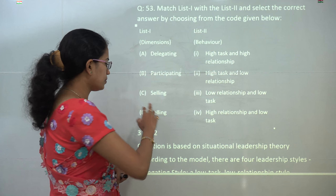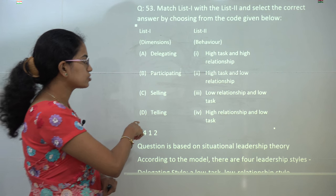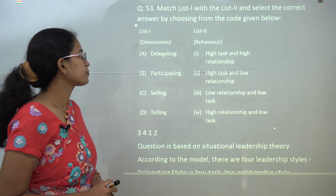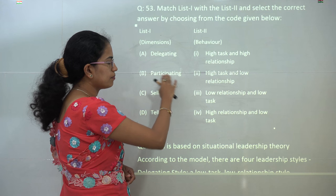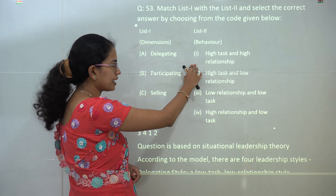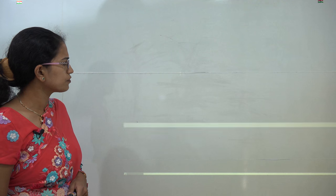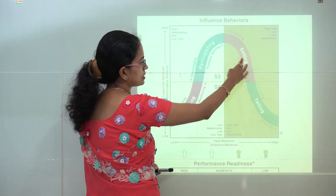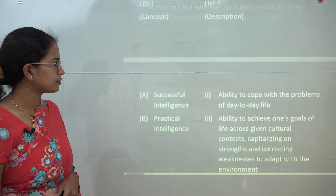Now next, you have to understand the situational leadership theory. Based on that, in this question the choices were incorrect, so make sure this is a kind of bonus question. Now delegating implies low relationship and low task, participating implies high relationship but low task, selling implies high relationship and high task, and telling implies high task and low relationship. So if you look onto this diagram, you can very well understand the four categories that are given here: selling, telling, delegating, and participating. All this would be available at doorstep tutor.